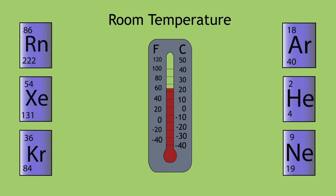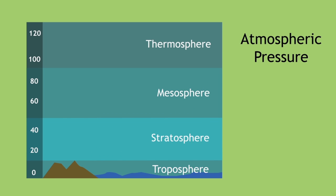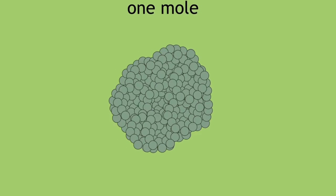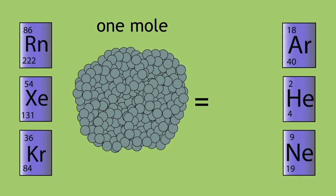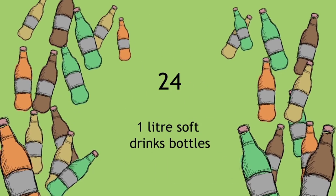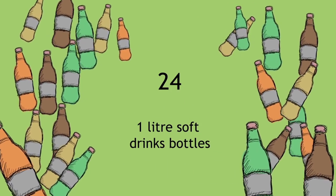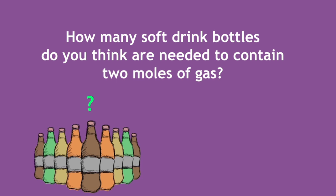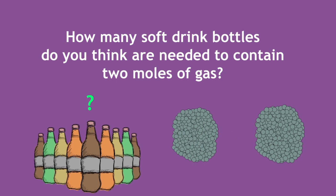This is the same for all gases at room temperature and atmospheric pressure. So, if we know that one mole of any gas occupies 24 litres, think 24 one-litre soft drinks bottles, then how many soft drinks bottles do you think are needed to contain 2 moles of any gas?